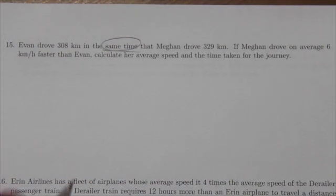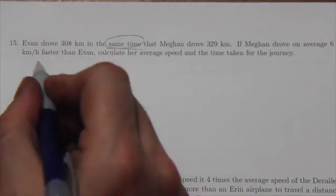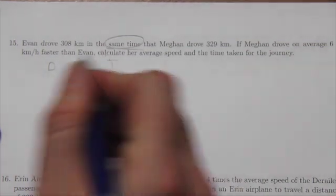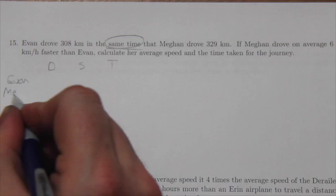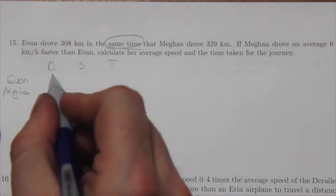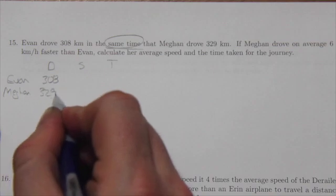So I'm gonna build a little chart here. You're gonna see this chart show up an awful lot. It's gonna be a distance, speed, time chart and then we've got two scenarios here. We've got Evan and we've got Megan. Now Evan drove 308, Megan drove 329.